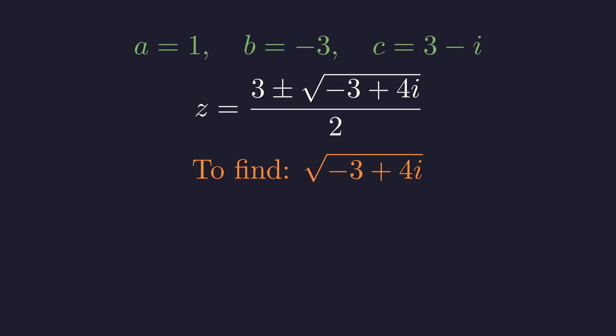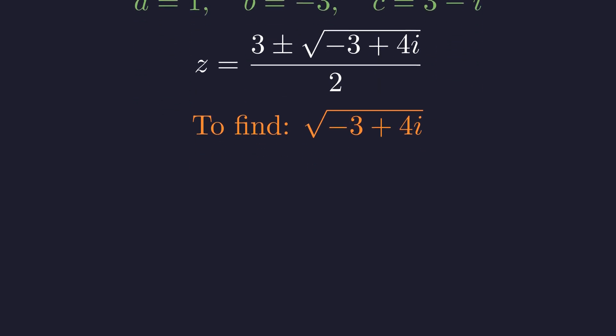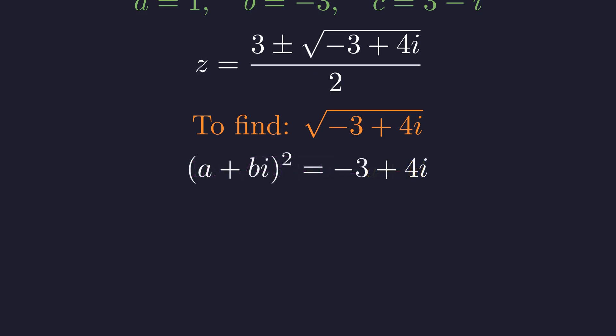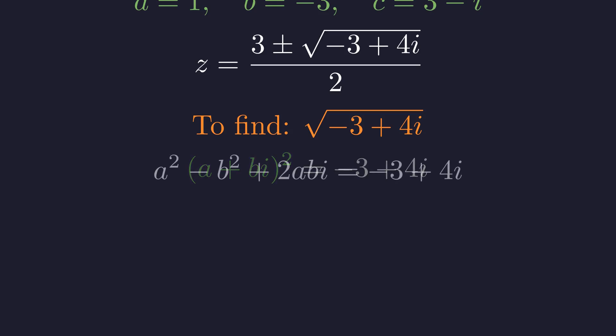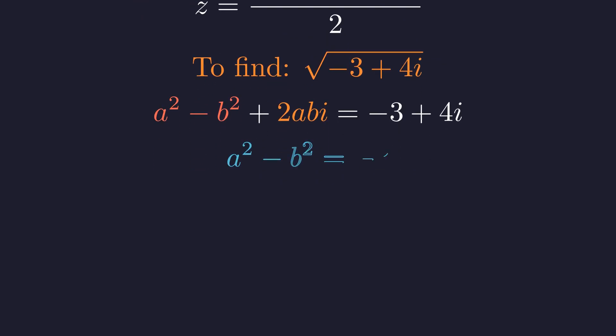We need to find the square root of negative 3 plus 4i. Let the square root equal a plus bi where a and b are real. Squaring both sides: the quantity a plus bi squared equals negative 3 plus 4i. Expanding the left side: a squared minus b squared plus 2abi equals negative 3 plus 4i. Matching real and imaginary parts gives a squared minus b squared equals negative 3 and 2ab equals 4, so ab equals 2.